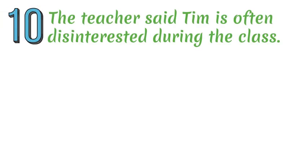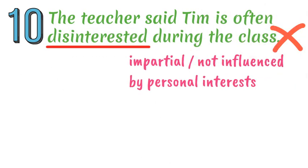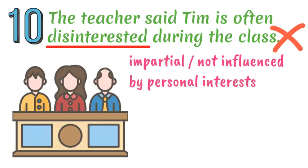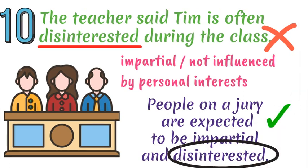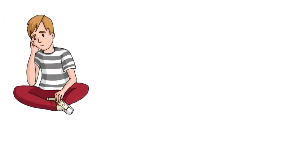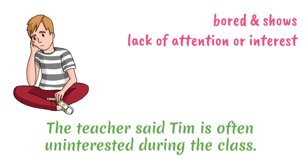Mistake number ten. If you are 'disinterested', it means you are impartial and not influenced by personal interests. However, if someone is bored and shows a lack of attention or interest in something, they are 'uninterested'. For example: 'The teacher said Tim is often uninterested during the class.'